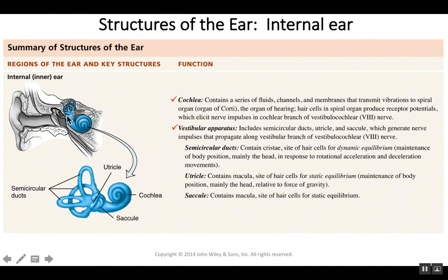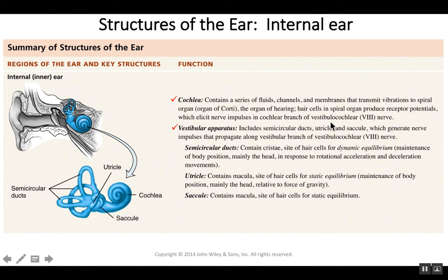As the stapes vibrates in the oval window, it produces waves of fluid known as endolymph inside the cochlea. As those waves move inside the cochlea, they stimulate sensory structures known as the organ of Corti. Inside the organ of Corti are sensory receptor cells known as hair cells. These hair cells produce action potentials that travel to the brain within the cochlear branch of the vestibulocochlear nerve.